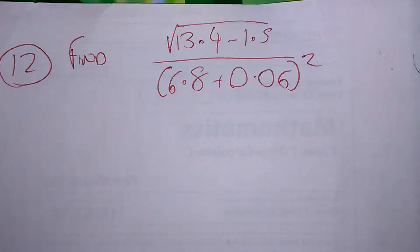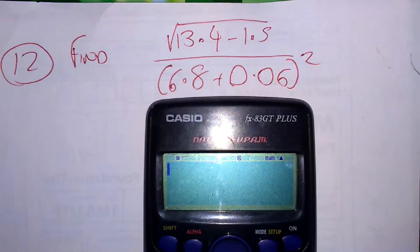Find the square root of 13.4 minus 1.5, all over 6.8 plus 0.06 squared. I'm going to type all of this into my calculator.